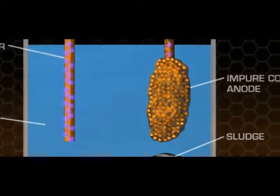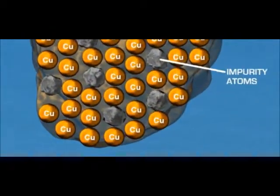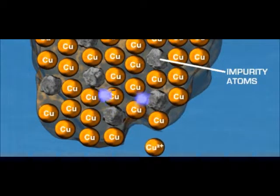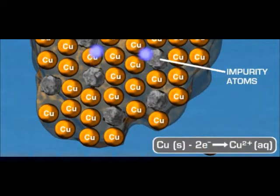This process involves a gain of electrons, a reduction. Copper ions are reduced to copper. The copper atoms stick to the cathode increasing its mass.